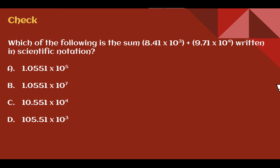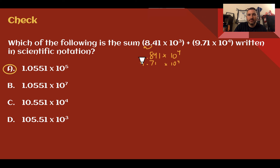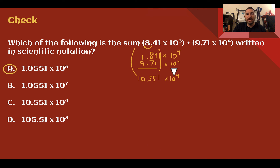Check your understanding: which of the following is the sum of those two numbers written in scientific notation? Pause the video now and complete the check. Check your answer — you should have said A: 1.0551 times 10 to the 5th. Convert so both have the same exponent: change to 10 to the 4th by moving the decimal left one place, giving 0.841. Then add 0.841 and 9.71, both times 10 to the 4th. Factoring out 10 to the 4th: 0.841 plus 9.71 equals 10.551. Since 10.551 is not in proper scientific notation, move the decimal one place left and increase the exponent by 1: 1.0551 times 10 to the 5th.